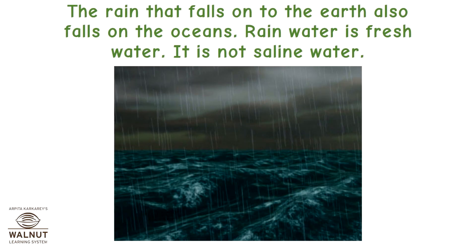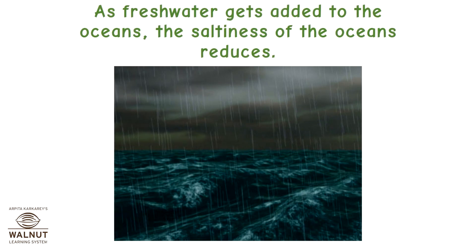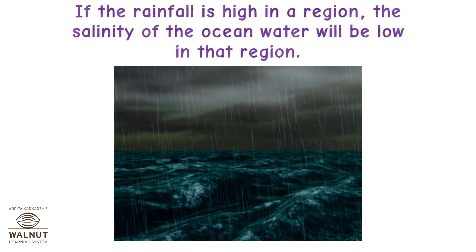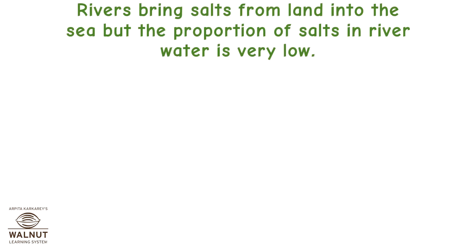The rain that falls onto the earth also falls on the oceans. Rain water is fresh water — it is not saline water. As fresh water gets added to the oceans, the saltiness of the oceans reduces. If the rainfall is high in a region, the salinity of the ocean water will be low in that region. Rivers bring salts from land into the sea, but the proportion of salts in the river water is very low.